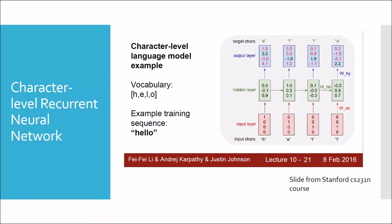Character-level recurrent neural network was initially introduced by Andrej Karpathy. The model gets characters one by one as input and learns to predict the next character as its learning purpose. Finally, it can generate a new sequence of characters from what it has learned.